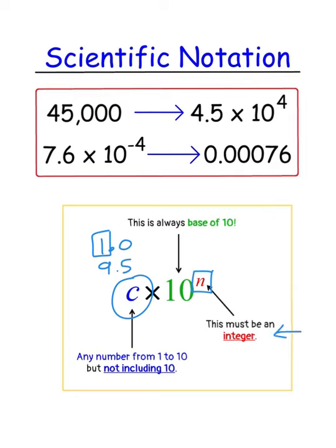That exponent must be an integer — meaning a positive or negative whole number. So you'll see here we have 45,000. We can express 45,000 as 4.5 times 10 to the power of 4. We move the decimal place 1, 2, 3, 4 places to get one digit before the decimal — that's where the 4 comes from. For 7.6 times 10 to the negative 4, we move the decimal 4 places and get 0.00076 — that's where the negative 4 comes from.